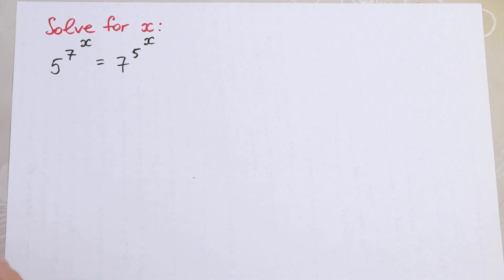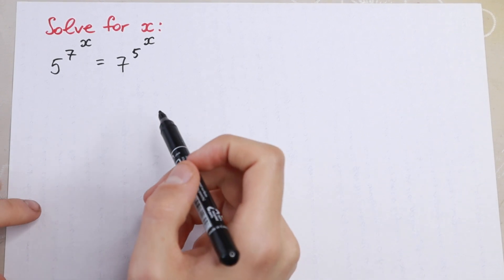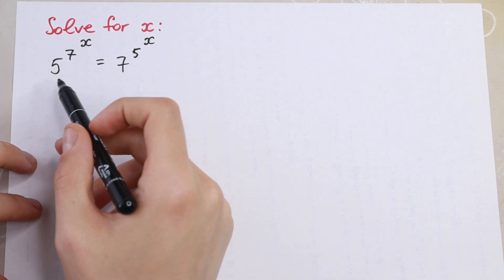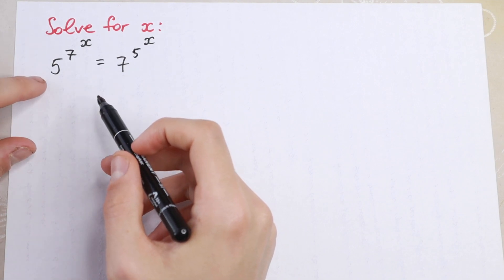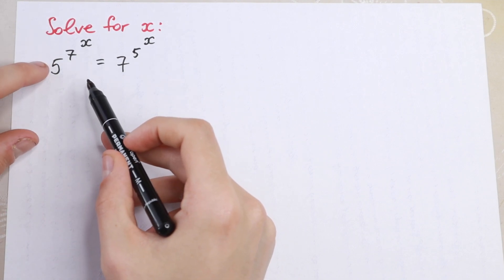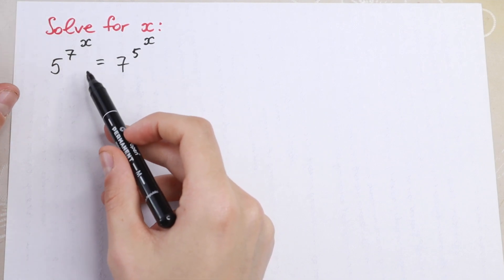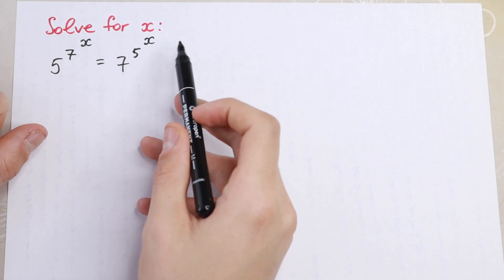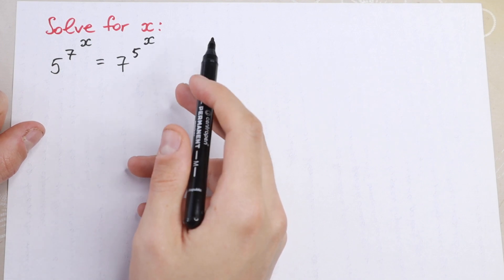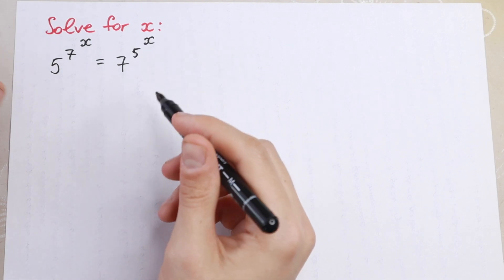Hello everyone, welcome back to Higher Mathematics. In this video we are going to solve this interesting algebra problem. We have 5 to the power 7 to the power x equal to 7 to the power 5 to the power x. So how can you solve it?